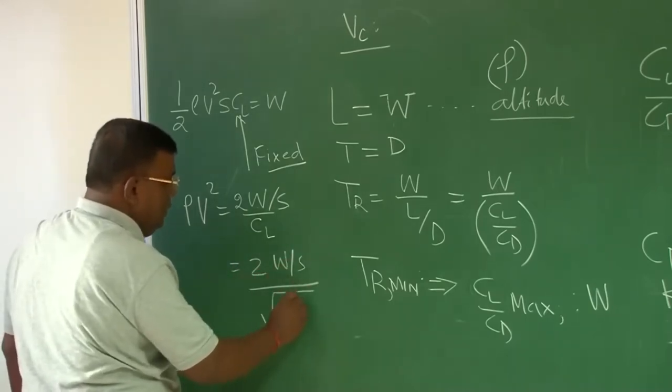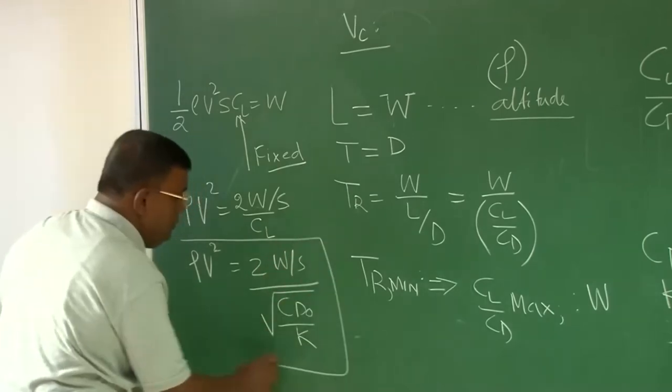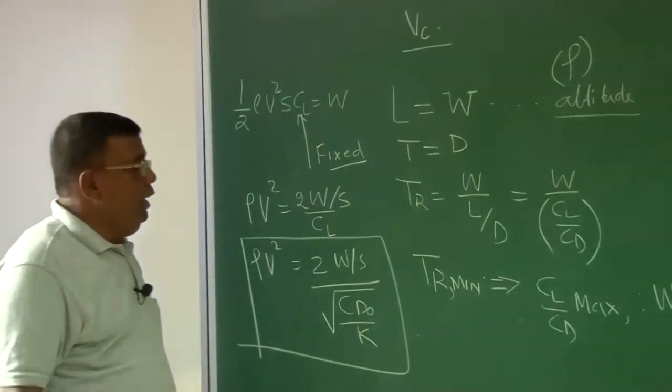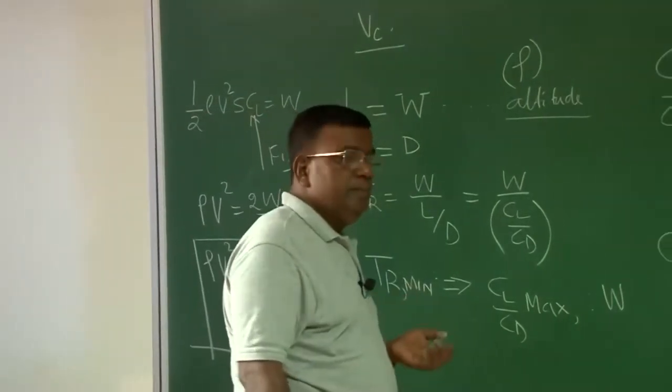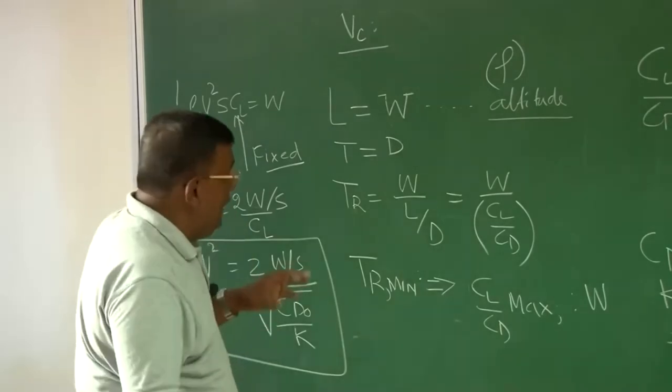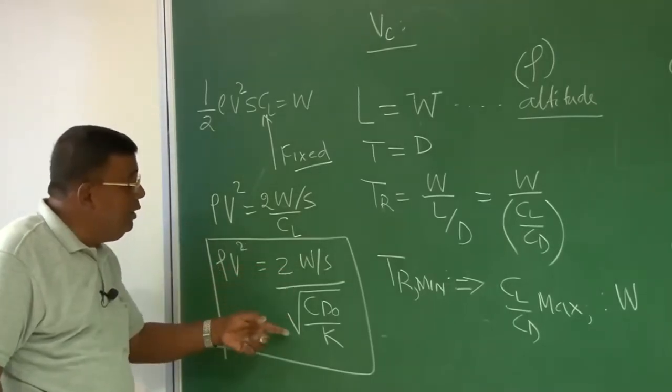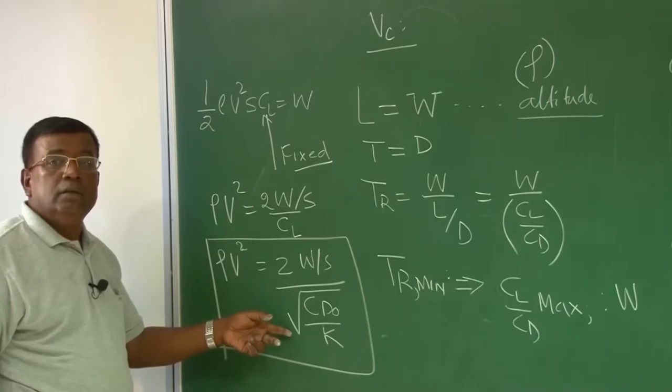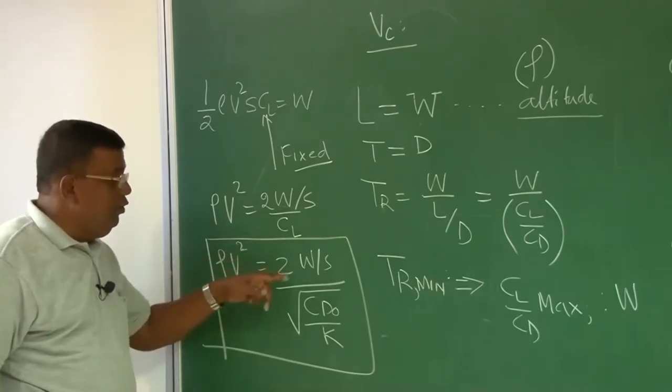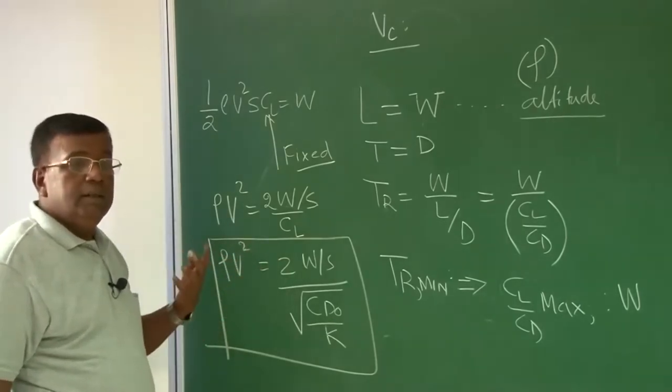What is the message? Message is, if you want to fly at thrust required minimum for a given wing loading, then you have to ensure that rho into V square should be fixed which is given by this number. Your airplane should have been designed in such a way that rho into V square should be 2 W by S under root CD0 by k. As long as you maintain this, you will be able to fly at thrust required minimum. Now, what is the meaning of rho V square to be a fixed number? We are writing here rho V square to be equal to 2 W by S by under root CD0 by k.